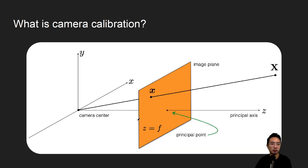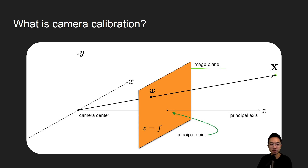To really understand camera calibration, you have to know the camera model. For the camera model, you typically have a camera center, an image plane, and a world point out here. The idea is we want to find these parameters so that if we project a point onto the image plane, we do so correctly. All of these parameters need to be accurately determined.